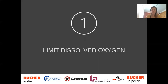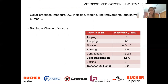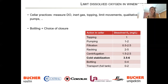Let's start with limiting dissolved oxygen. This is a pretty standard recommendation: check your cellar practices. It's something you must follow all the way from grape reception to bottling. You can measure dissolved oxygen, use inert gas every time you do a transfer, maintain your topping schedule, limit movement, and use quality equipment — particularly pumps. At bottling, it's very important to work with a bottling line that can be kept inert, where you control and limit oxygen.